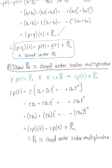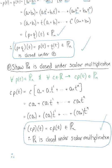In confirming this, all other scalar multiplication axioms hold true. P sub n is closed under addition and closed under scalar multiplication. Therefore, P sub n is a vector space.